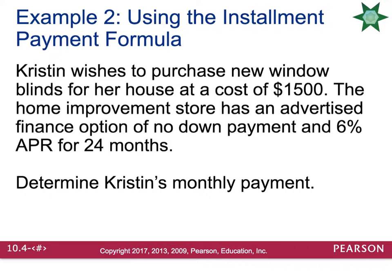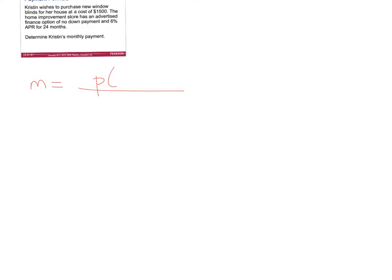Let's look at an example. Kristen wishes to purchase new window blinds for her house at a cost of $1,500. The home improvement store has an advertised finance option of no down payment and 6% annual percentage rate for 24 months. We need to determine Kristen's monthly payment using the payment formula: M equals P times R divided by N, all over 1 minus (1 plus R over N) raised to the negative NT.